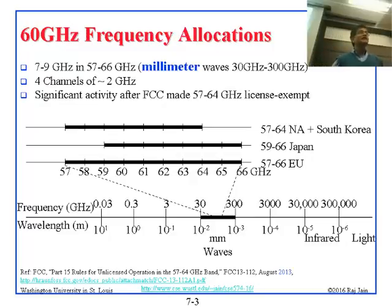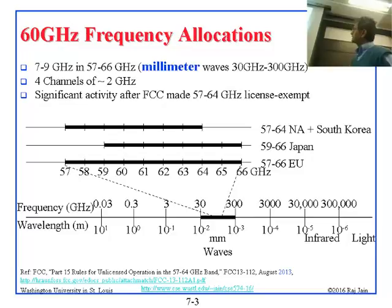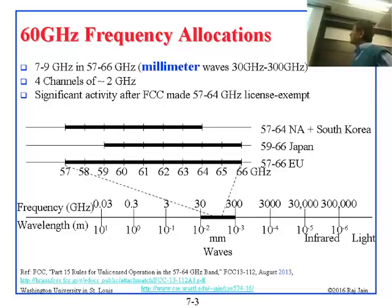By the way, it is called millimeter wave because the wavelength is in millimeters. If you are at 30 megahertz, the wavelength is 10 meters. At 3 gigahertz — so 2.4 GHz is just below it — the wavelength is about 10 centimeters. In one of the exercises you calculated that for 2.4 gigahertz it was 12.5 centimeters, which is 1.25 decimeters — a decimeter wave. At 5.8 GHz it's a centimeter wave, and anything between 30 and 300 GHz is millimeter wave.